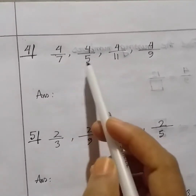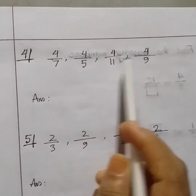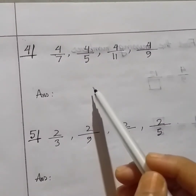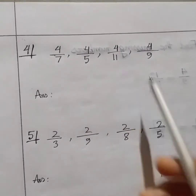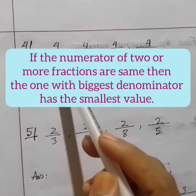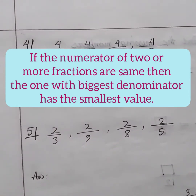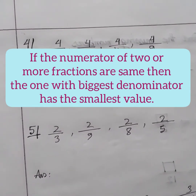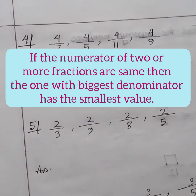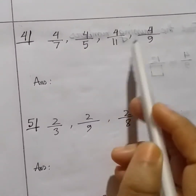Look, this example is of a different type. Here all the numerators are the same, but the denominators are different. So here we have to apply this rule: if the numerators of two or more fractions are the same, then the one with the biggest denominator has the smallest value.